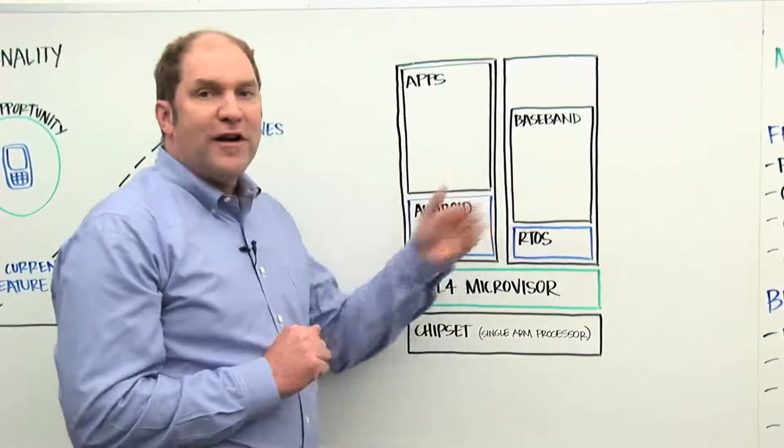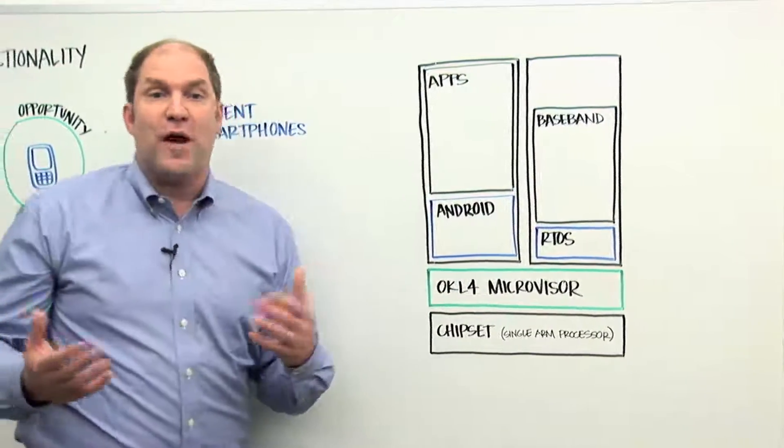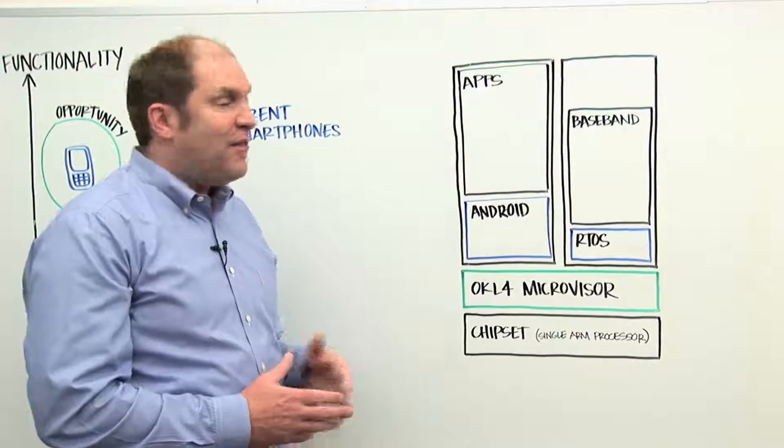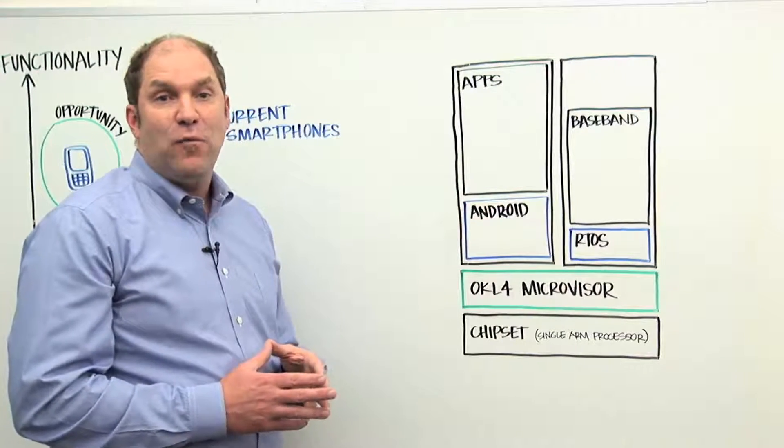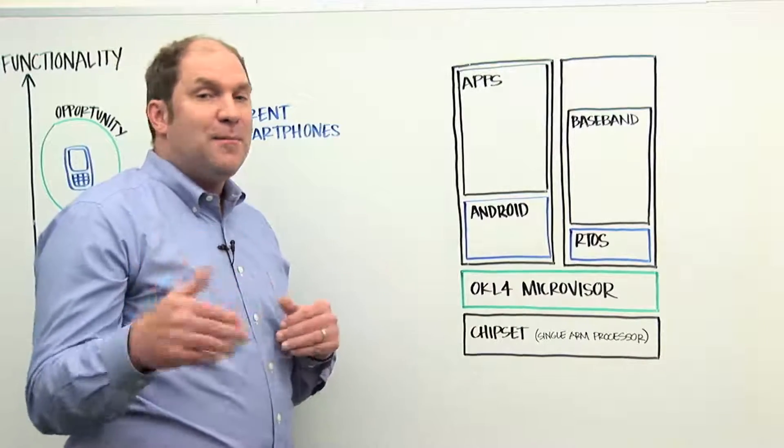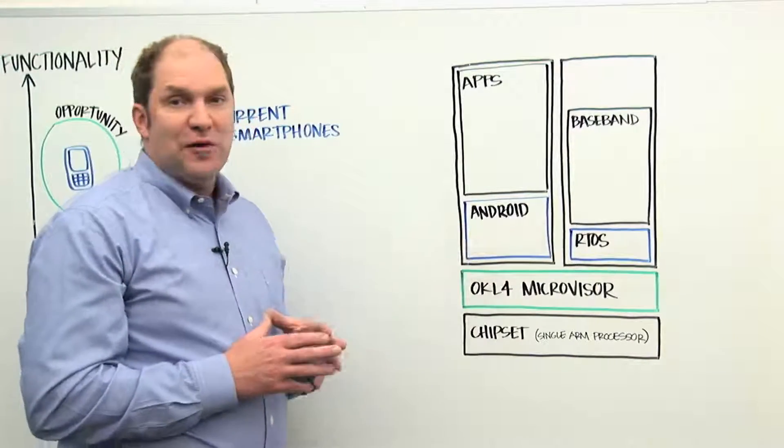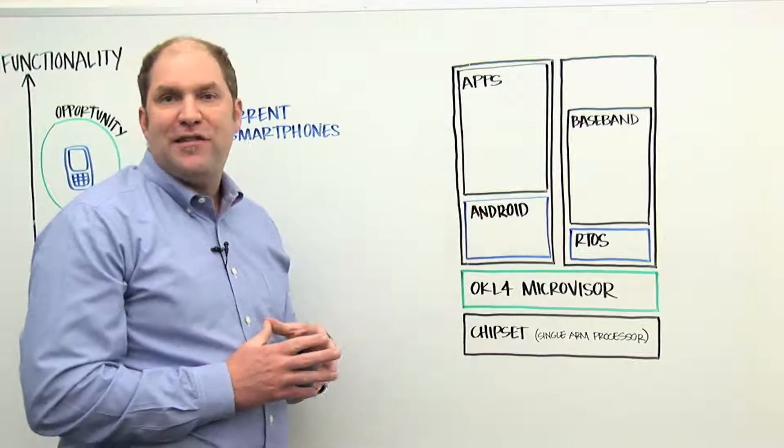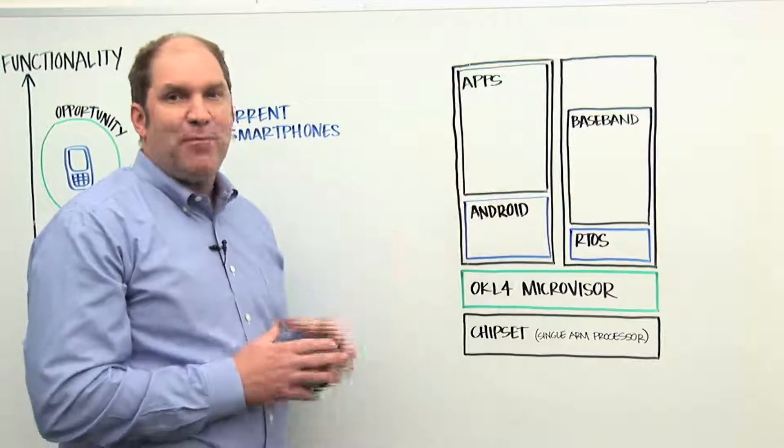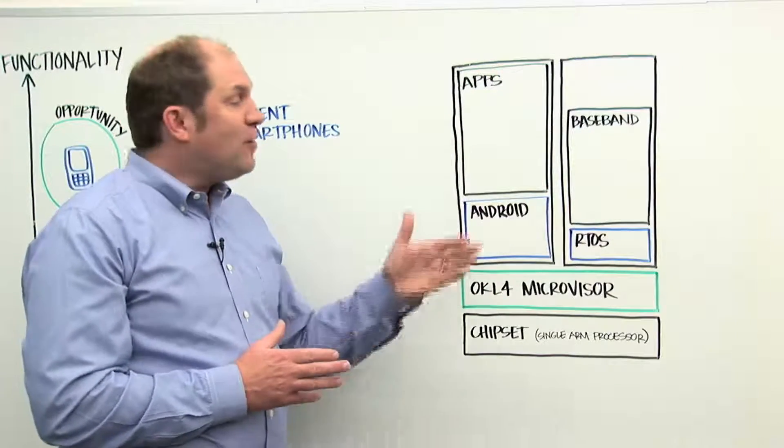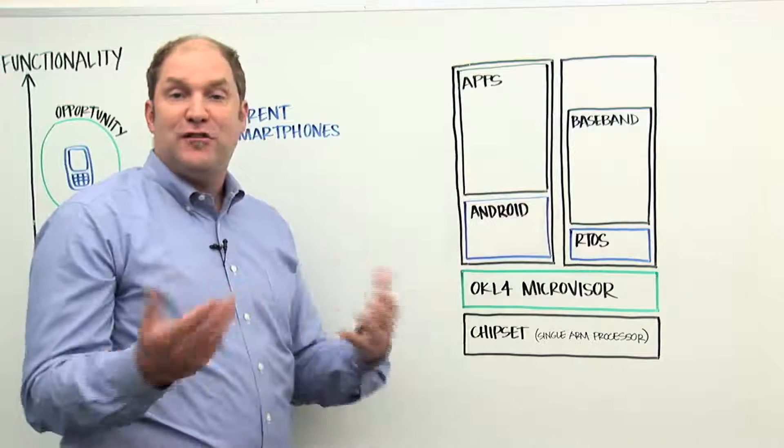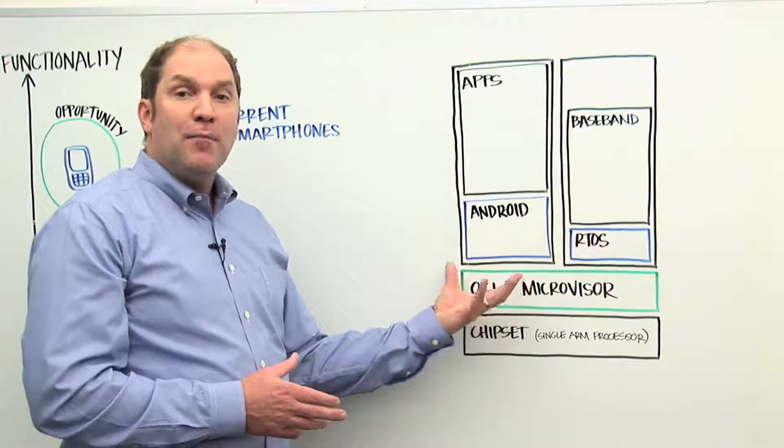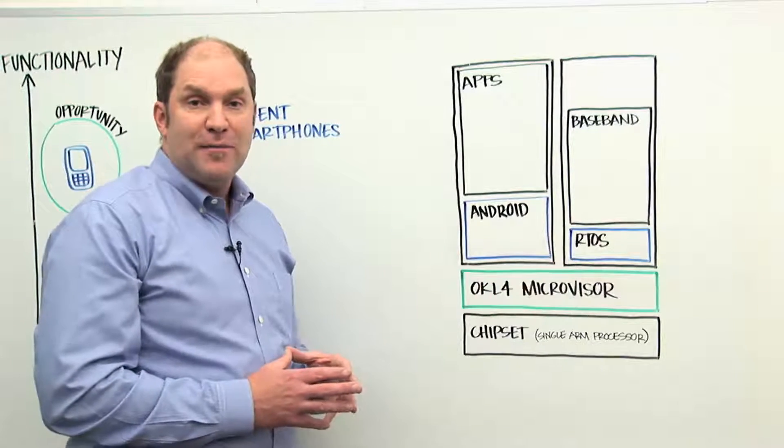Well, if you look at the software architecture of a typical smartphone, it really revolves around two primary software subsystems. The first is the application processing subsystem. This is where your smartphone operating system runs. Whether it's Android, Windows, Symbian, Linux, it doesn't really matter. In a feature phone, you have a baseband subsystem and little or no application support. In a smartphone, you have a rich application environment and the baseband.